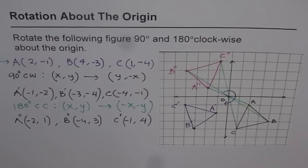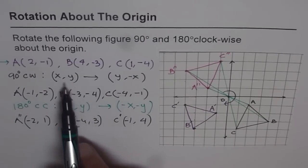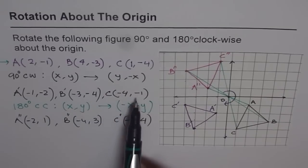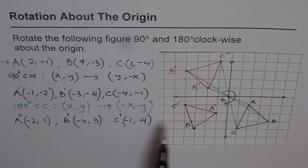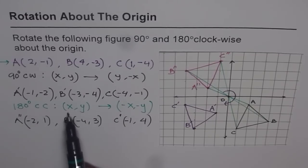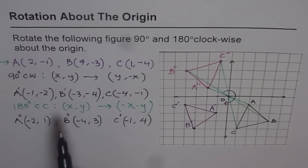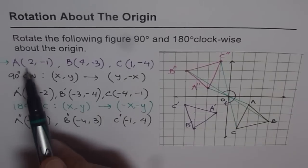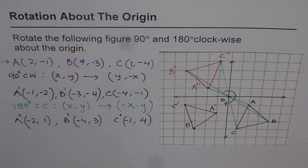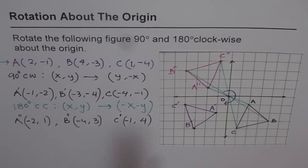So with this video, you learn two things. One, how to rotate clockwise: for 90 degrees clockwise rotation, just interchange X and Y, and then change the sign for the Y point. For 180 degrees, just change the signs — don't swap, just negate both. And lastly, you learned how to check your result: if a line through the image point and the original point passes through the origin, it confirms 180 degrees rotation. For 90 degrees, use your set square. I hope that helps. Thank you and all the best.